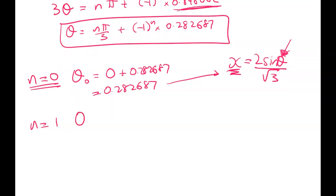Let's get a couple more. So n is equal to 1. That gives me theta 1 is equal to 1 pi on 3. So pi on 3 minus 0.282687 giving me a theta 1 of 0.7645.